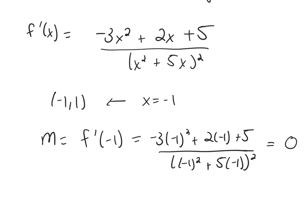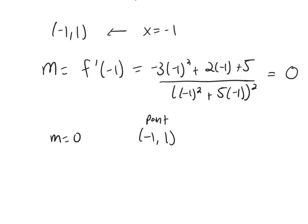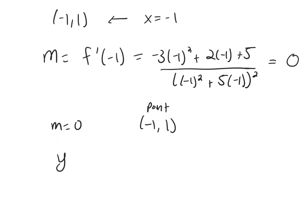So this slope of our tangent line will be 0. So I've got my slope for my line, and I've got my point being negative 1, 1. So now you write the equation of the tangent line.